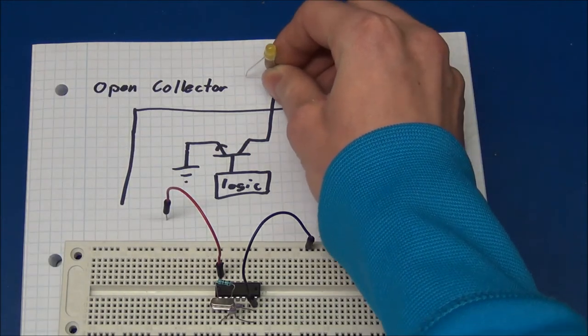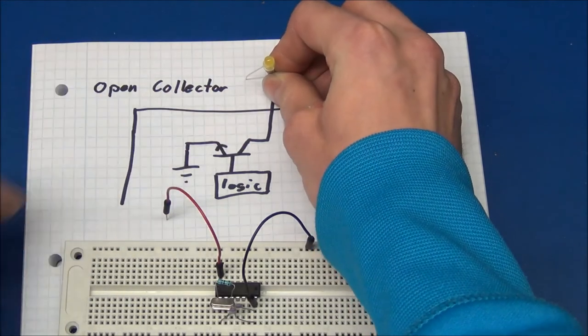On the other hand, I could connect it from the positive to the chip, and when the output is low, the LED will light up.